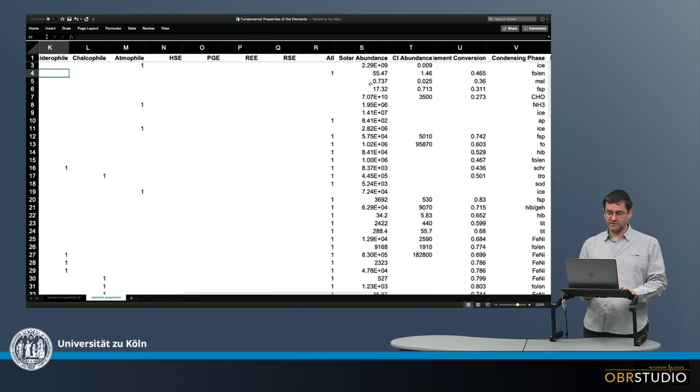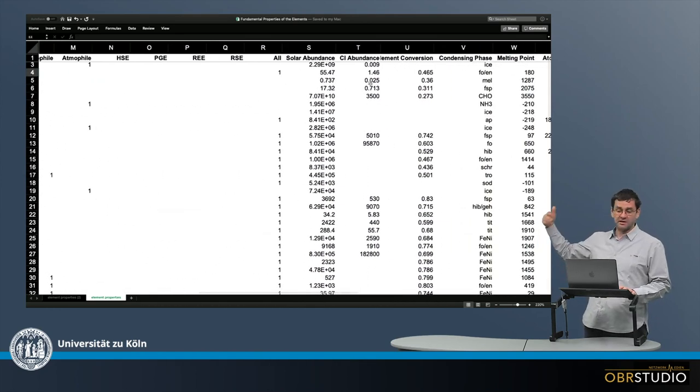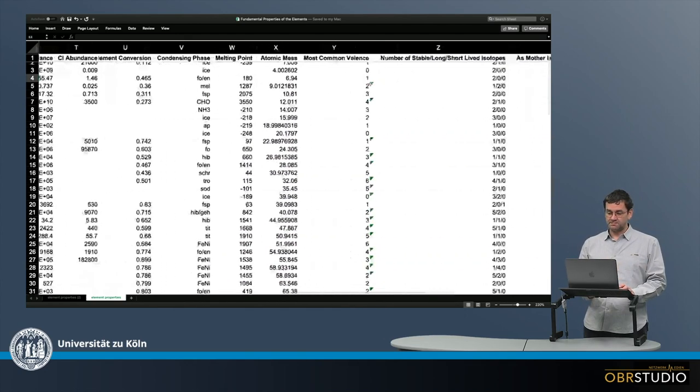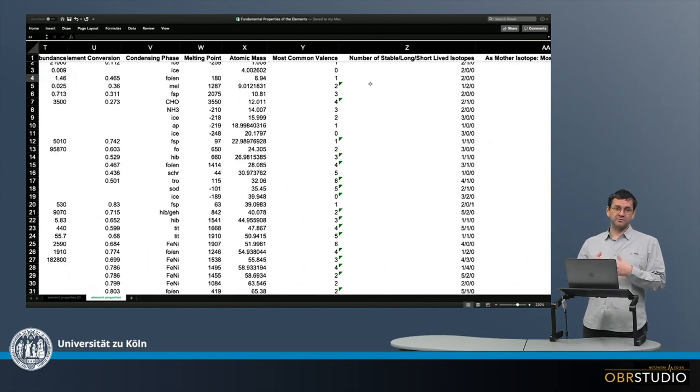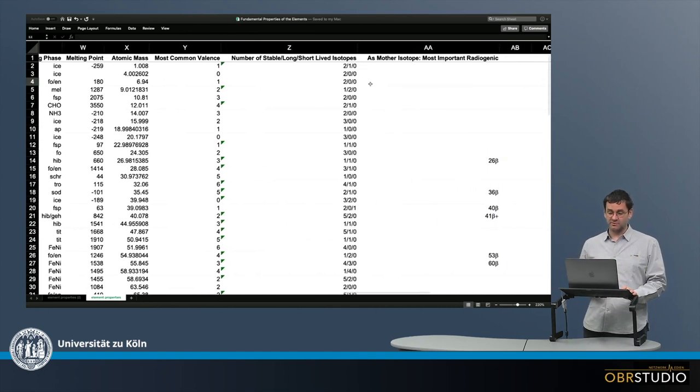And then there's additional information, something like solar abundances, conversion factors for oxide into element, some information about the valence, also isotope information and all this kind of stuff.